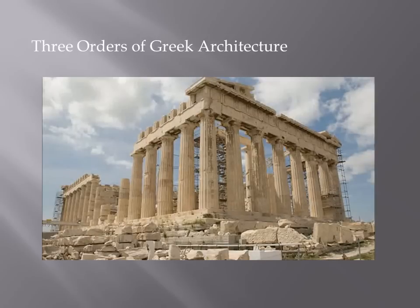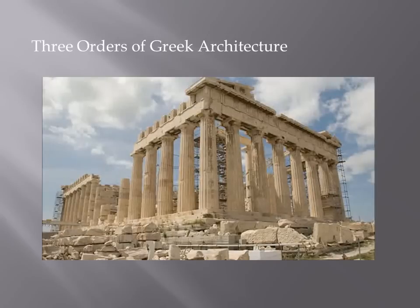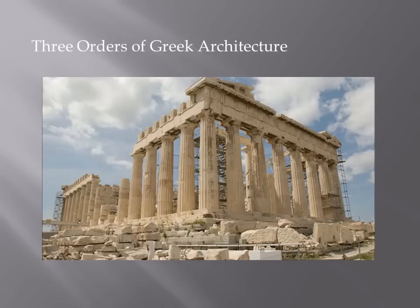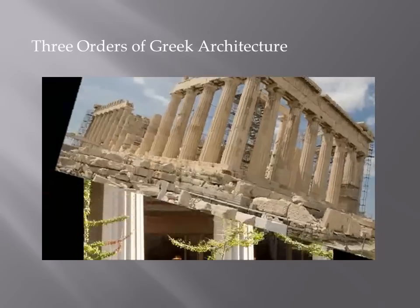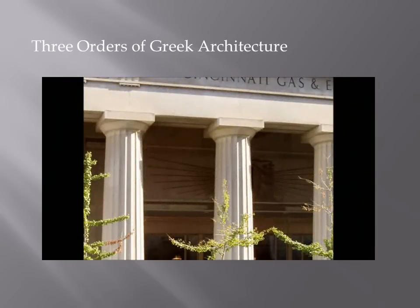You'll see examples of these columns everywhere. Neoclassical architecture incorporates these ancient Greek and ancient Roman classical orders. The Romans adopted the Greek orders and refined them, incorporating those ancient styles into modern architecture as well. So look around next time you see a building with columns and see if you can identify which type of order it's based upon. The first order is the Doric order, which originated from the mainland and western Greece.